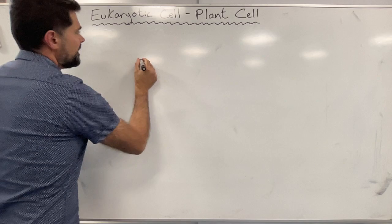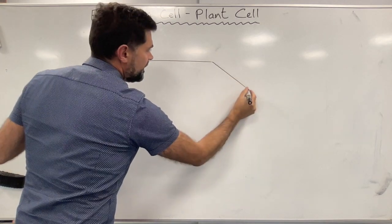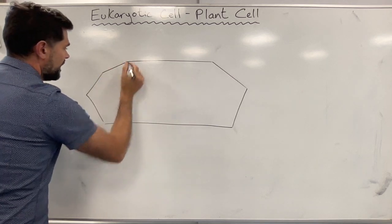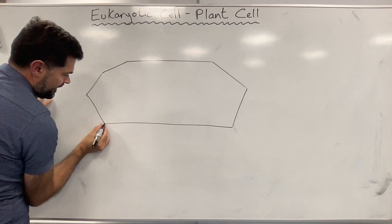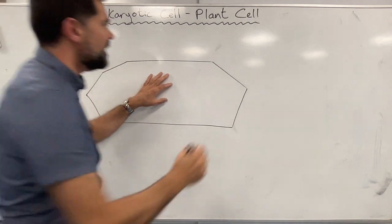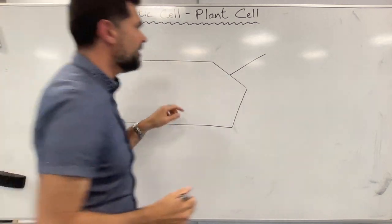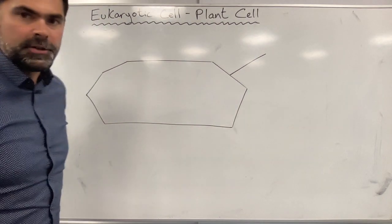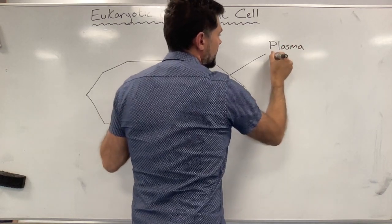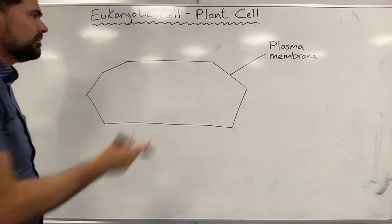I'm going to start off by drawing the plasma membrane. Plant cells, as you may have seen in an onion cell, tend to have angles on them where they connect with other cells. I'm taking care to connect the sides of the plasma membrane properly. Make sure that your labels connect exactly to the structure they refer to. I'm drawing on a whiteboard, but you should use a ruler and a pencil. I'll label this the plasma membrane — it's also called the cell membrane.